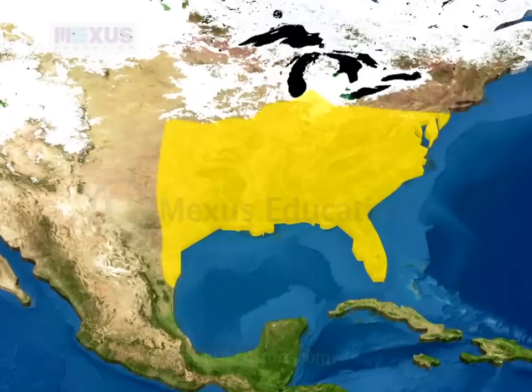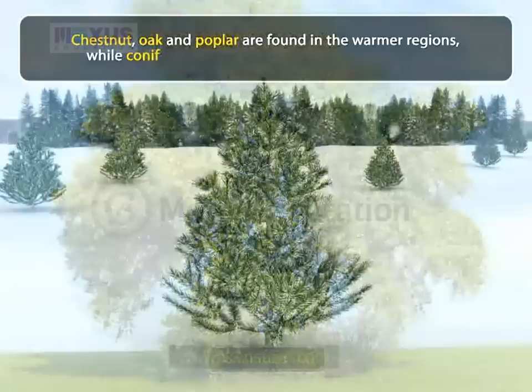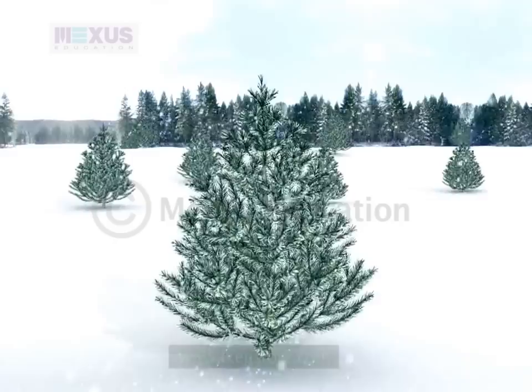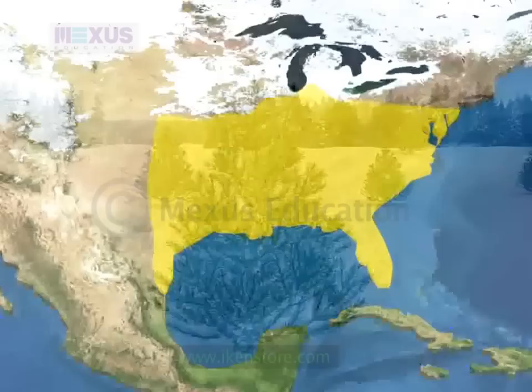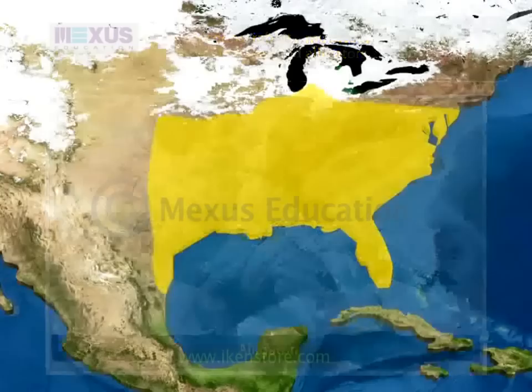Summers are hot and winters are mild with moderate rainfall almost throughout the year. Mixed forests are found here. Chestnut, oak and poplar are found in the warmer regions, while coniferous trees dominate in the cooler regions. Swamp forests of cypress trees are found along the coast in Florida. Foxes, squirrels, deer, raccoons, rabbits, muskrats, water moccasins, manatees, garpikes, white ibises and alligators are found here.